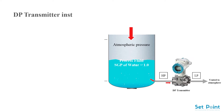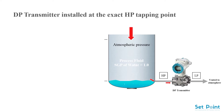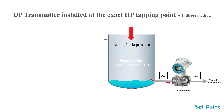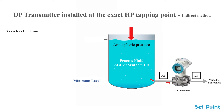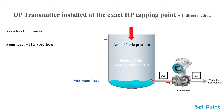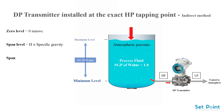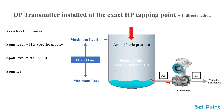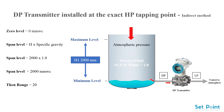DP transmitter installed at the exact HP tapping point — indirect method. The calculation of the DP transmitter in this case will be as follows: zero level equals zero millimeters water column, and span level equals H multiplied by the specific gravity of the measured liquid, giving a span level of 2000 millimeters water column.